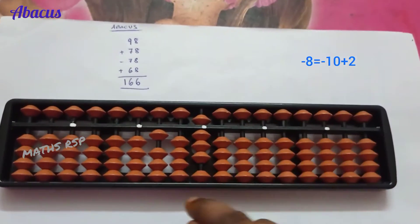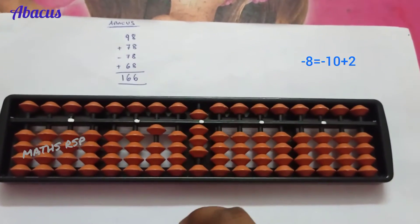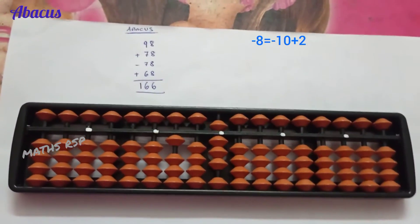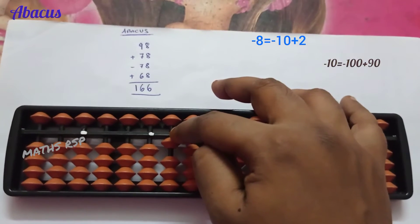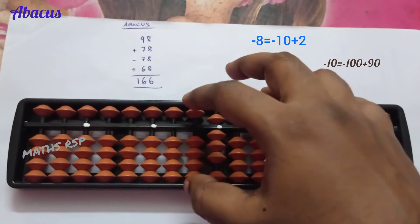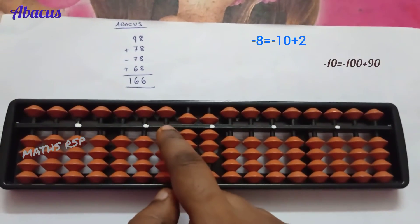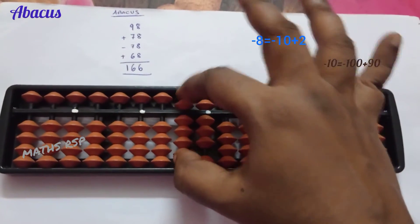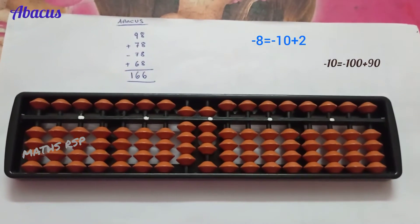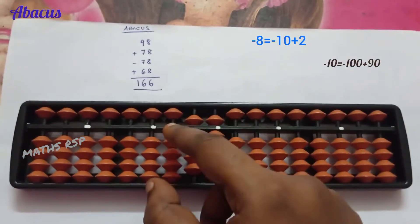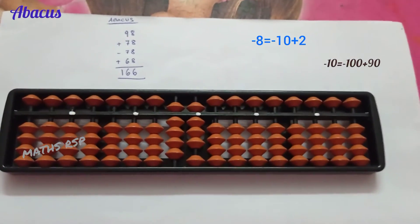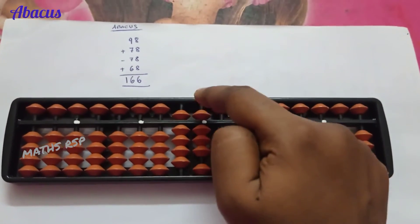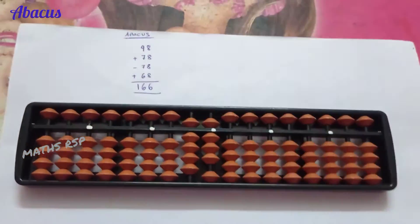Two is added in the one's strot, but we cannot remove ten beads from the ten's strot directly, so we go to the hundred's strot where beads are available. We remove one bead from the hundred's strot and add nine beads in the ten's strot: minus 100 plus 90 equals minus 10 is completed. Hence minus 10 plus 2 equals minus 8 is removed from the one's strot. Up to the third row is completed.